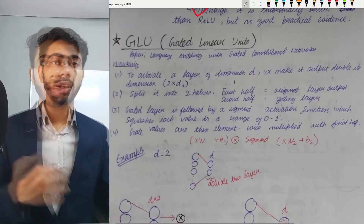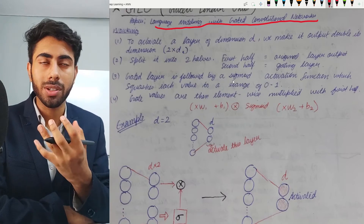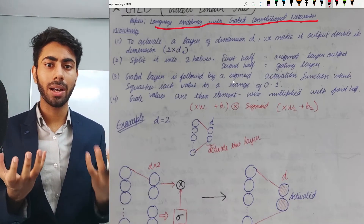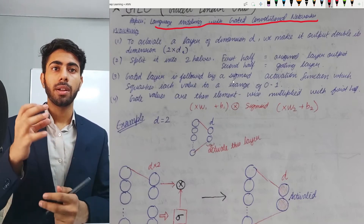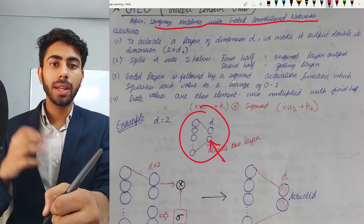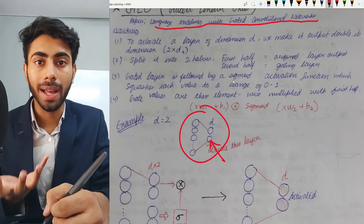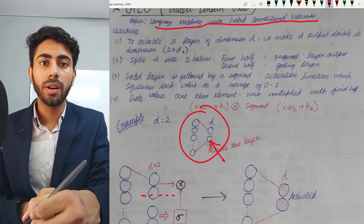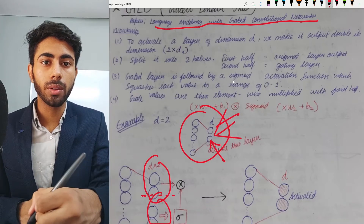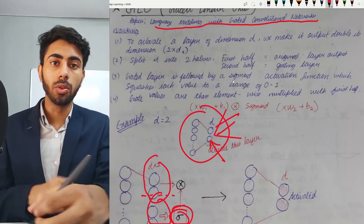Therefore we generally use ReLU only. Now let us discuss GLU, or Gated Linear Units. This activation function has a slightly different working from the rest. In the neural network layer where we want to apply the activation function, we first double the dimensionality of that layer — for example, if a layer has a certain number of neurons, we double the neuron count — and then split it into two halves.